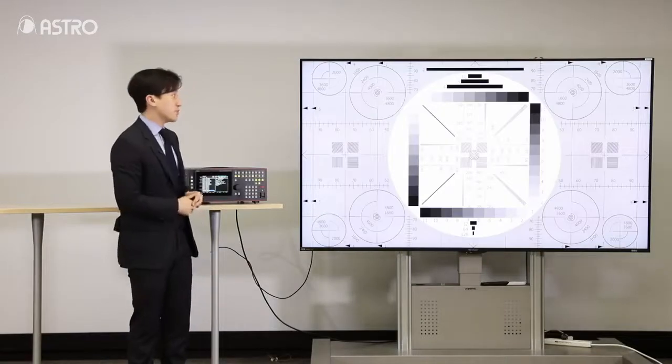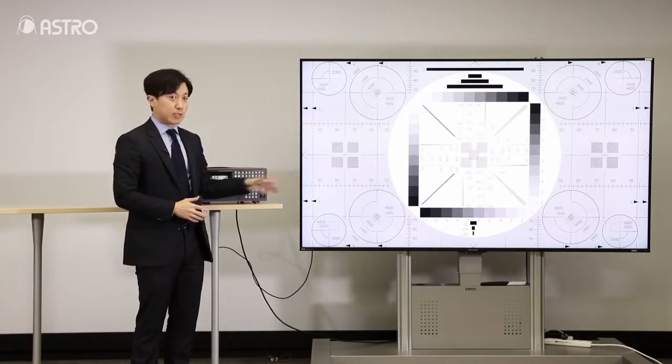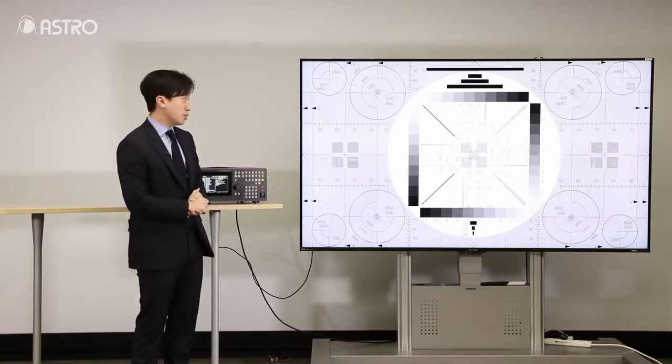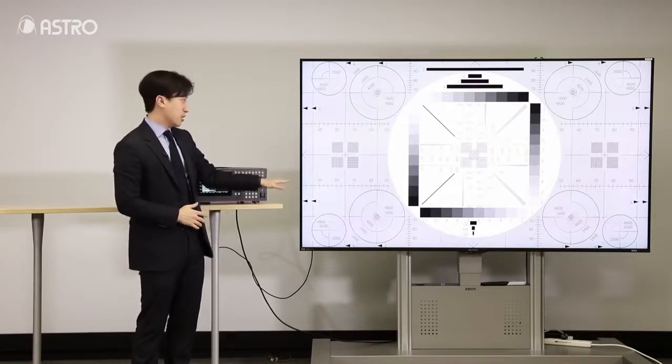And here we've also got an 8K monoscope. So with using the monoscope, this pattern, you can check the 8K resolution of the monitor as well.